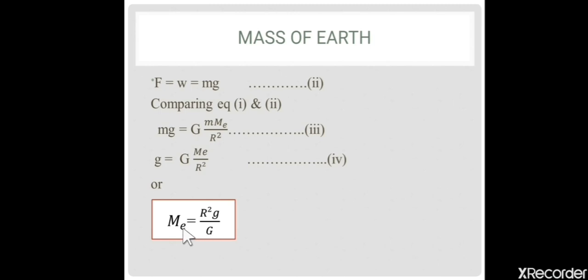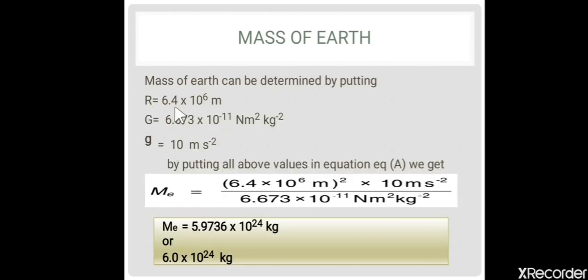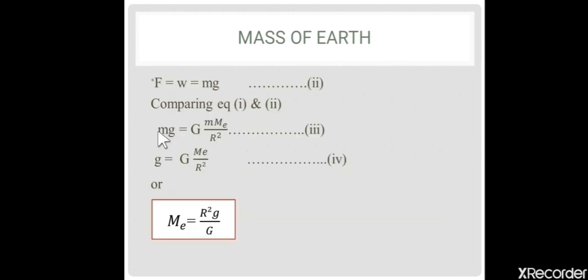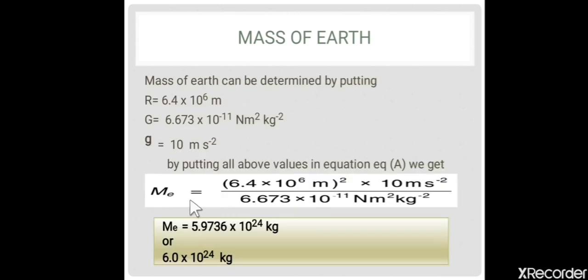Here we have to find the mass of the Earth. The radius of the Earth is 6.4 × 10⁶ m, the acceleration due to gravity on the surface of Earth is 10 m/s², and G is 6.673 × 10⁻¹¹ N·m²/kg². Substituting these values: ME = (6.4 × 10⁶)² × 10 / (6.673 × 10⁻¹¹). After simplification, the mass of the Earth is 5.9736 × 10²⁴ kg, which is approximately equal to 6 × 10²⁴ kg.